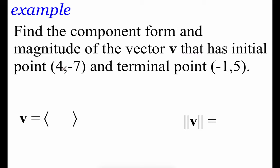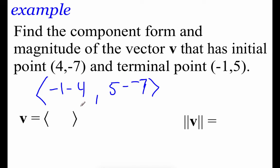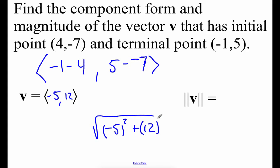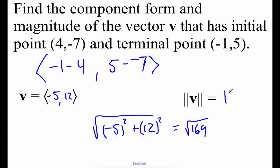Let's check out vector V with initial point (4, −7) and terminal point (−1, 5). We'll write it in component form and find its magnitude. For component form: take the terminal x minus the initial x, which is −1 − 4 = −5, and the terminal y minus the initial y, which is 5 − (−7) = 12. So component form is ⟨−5, 12⟩. Finding the magnitude is now easier: square root of (−5)² + 12² = square root of 25 + 144 = square root of 169 = 13.